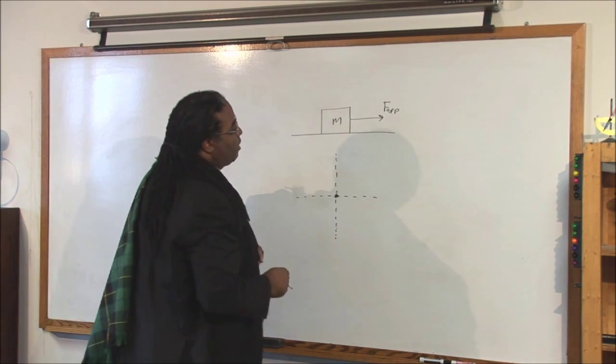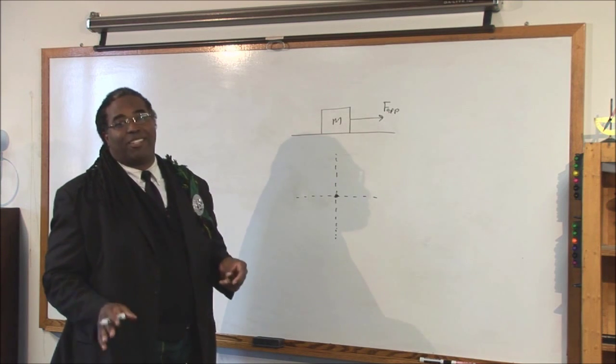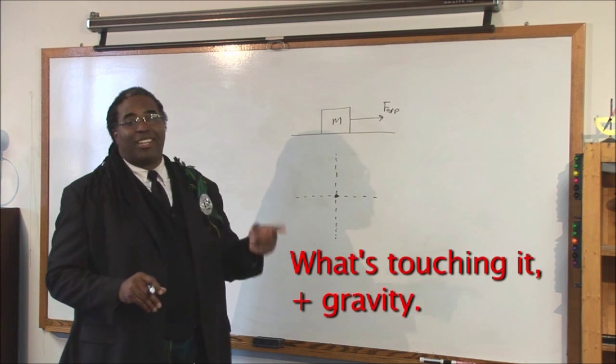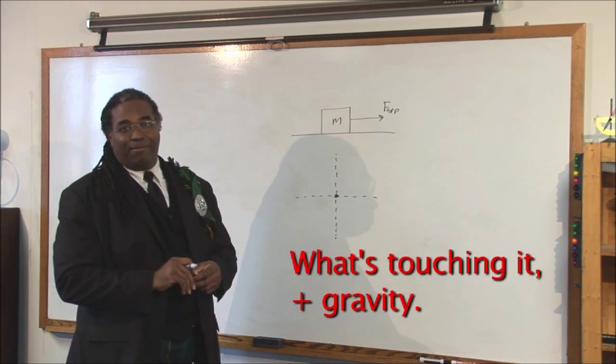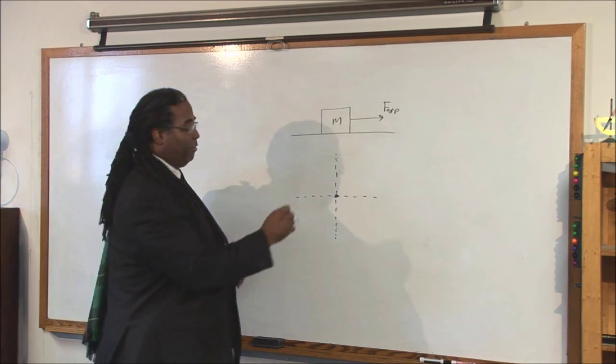So, how many forces are acting on the object? If you ever have a problem figuring out how many forces are acting on an object, ask the simple question: What's touching it plus gravity? Well, the ground is touching it, so that provides what's known as a normal force.